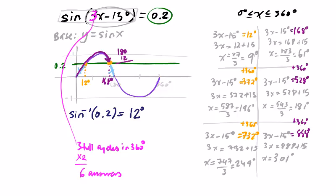Just now looking at all our answers, we have to have 6 answers. 9 degrees, 61 degrees, 196, 181, 249 and 301 degrees. 6 answers because we have this 3 here in front of x telling us that within the 360 degree range, we are going to have 6 answers because there are 3 full cycles in it.